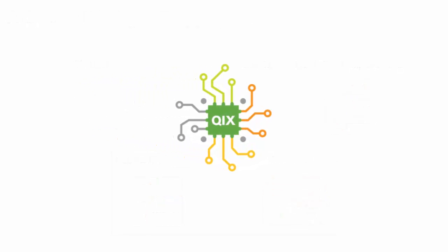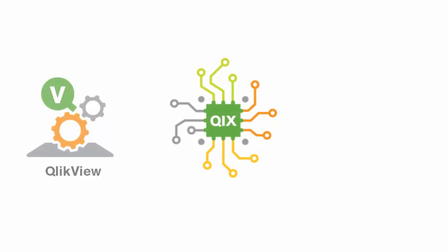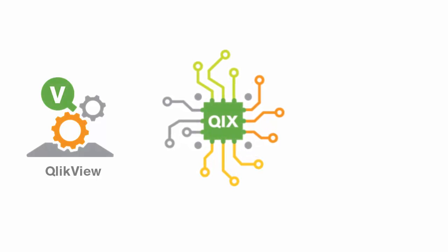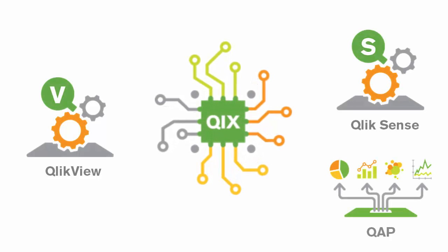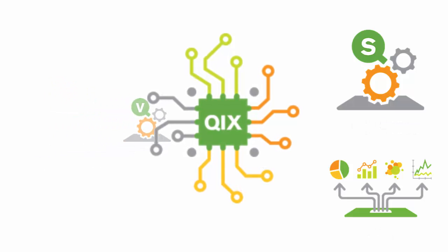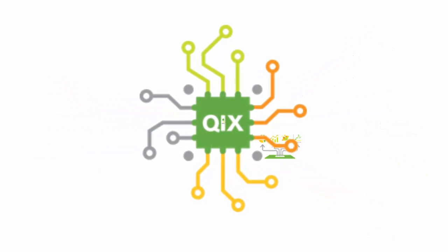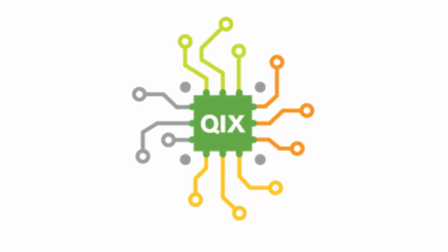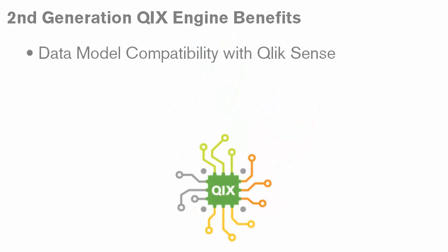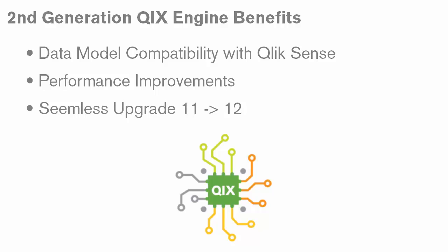The most significant investment in QlikView 12 is the inclusion of the second generation Qlik data indexing engine. QlikView now runs on the same modern engine that powers Qlik Sense and the Qlik Analytics platform. Modernizing the QlikView engine provides a number of significant benefits for our customers, both now and in the future. These include more seamless data model compatibility with Qlik Sense, performance improvements for analysis on wide data tables, and a seamless upgrade from QlikView 11 to 12.